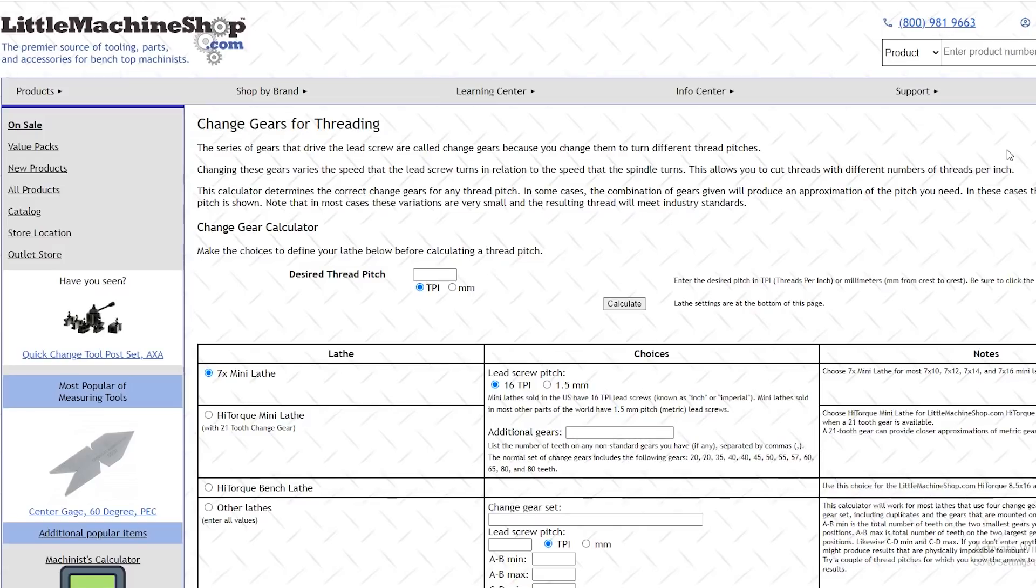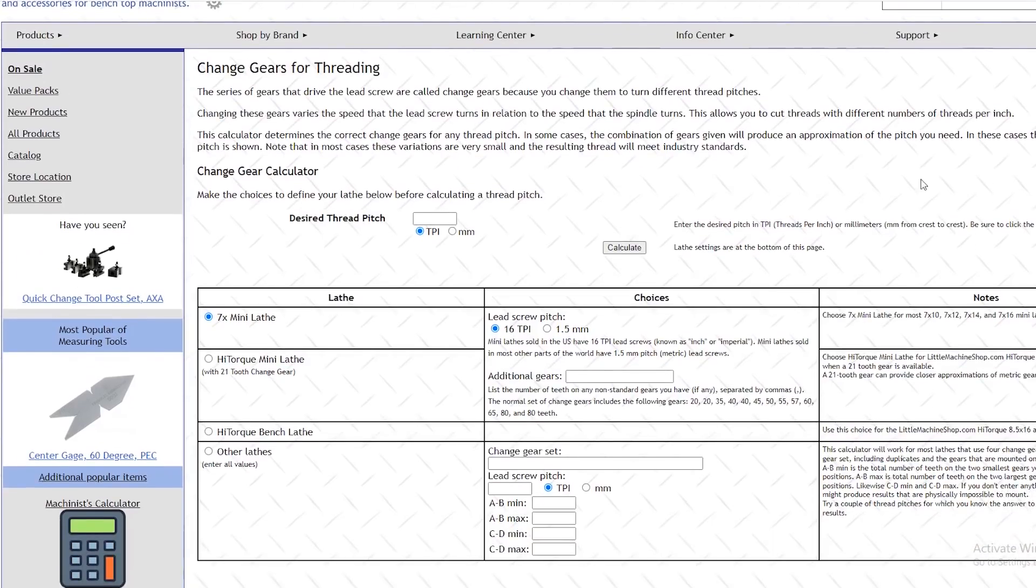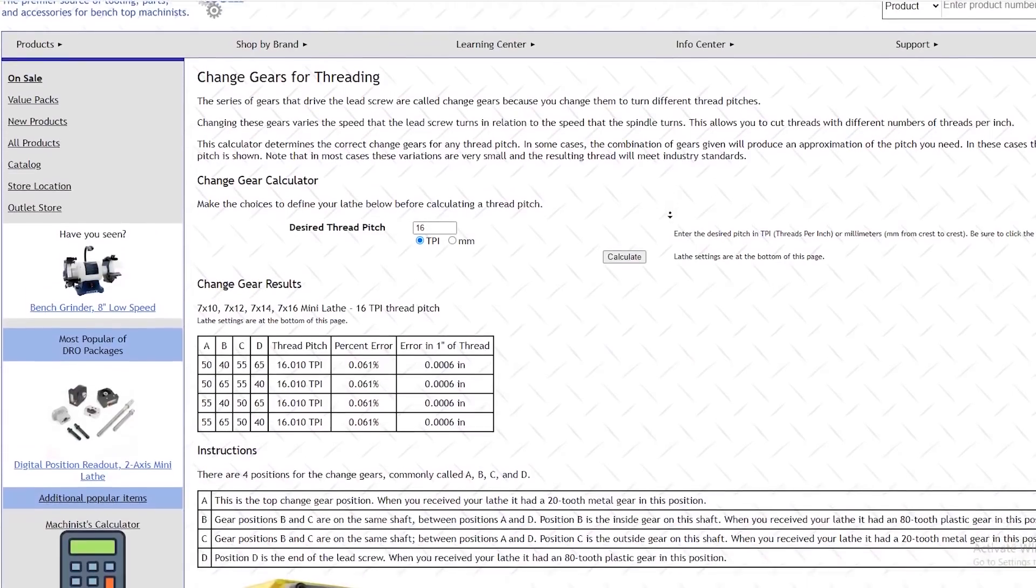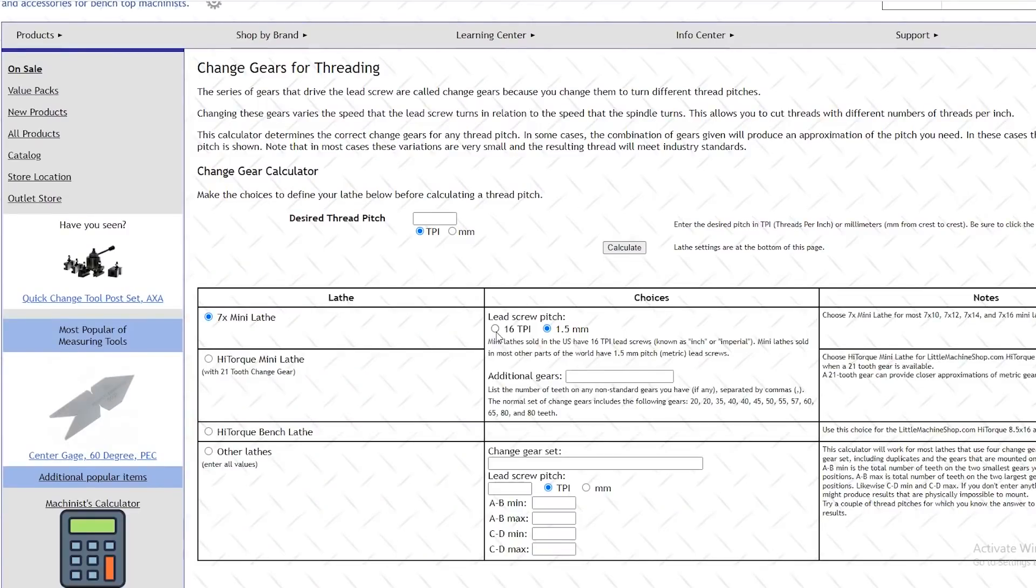They have an online calculator which will tell you what gears that you need and which order to put them in, depending on what size lathe that you have and the TPI of thread that you need to cut. And for those of you that have an imperial lathe, Little Machine Shop also has gear ratio calculators that will allow you to cut metric threads on your lathe.